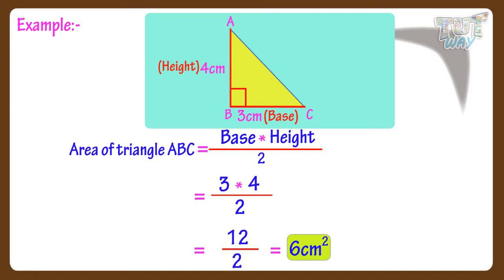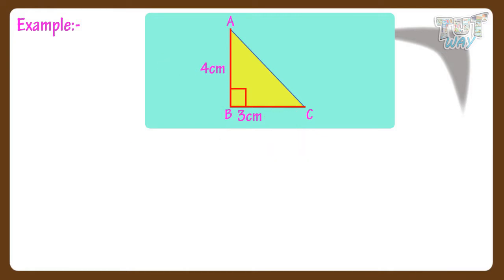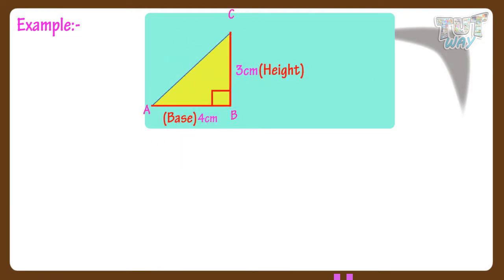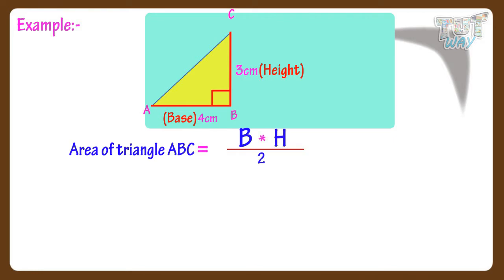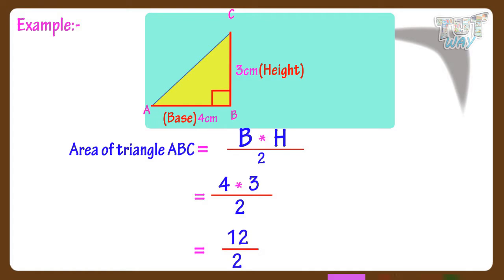We can also find the area of the triangle the other way. You can also take the perpendicular BC to the base AB. So area of triangle ABC equals base multiplied by height divided by 2. Here the base is 4 centimeters and height is 3 centimeters. So 4 multiplied by 3 divided by 2 gives 12 divided by 2, which equals 6 centimeters square. So kids, any side of the triangle can be the base on which the perpendicular is drawn.